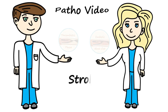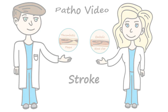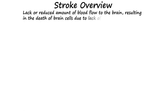The topic today is stroke. A stroke occurs when there is a lack or reduced amount of blood flow to the brain, resulting in the death of brain cells due to lack of oxygen and nutrients.